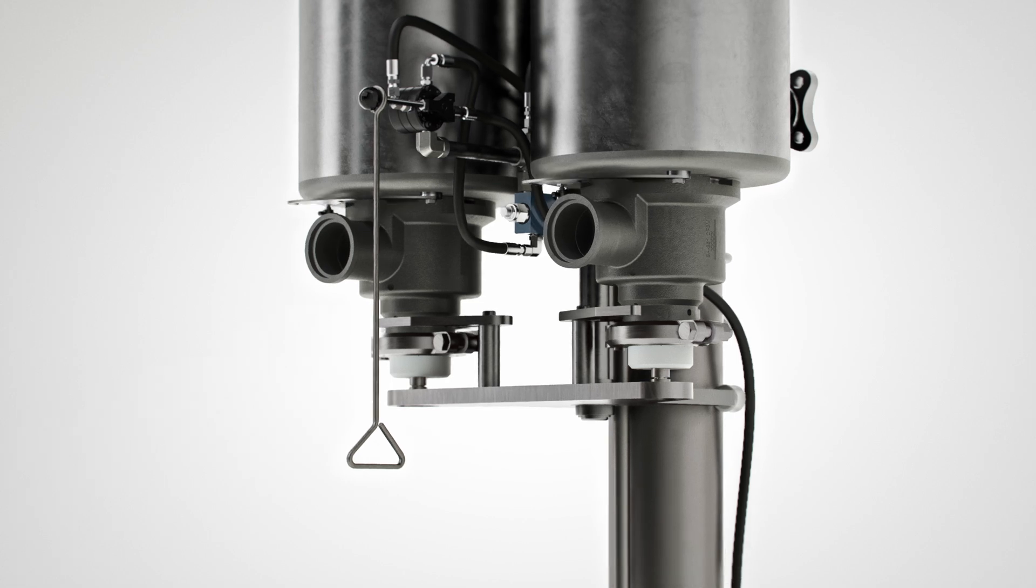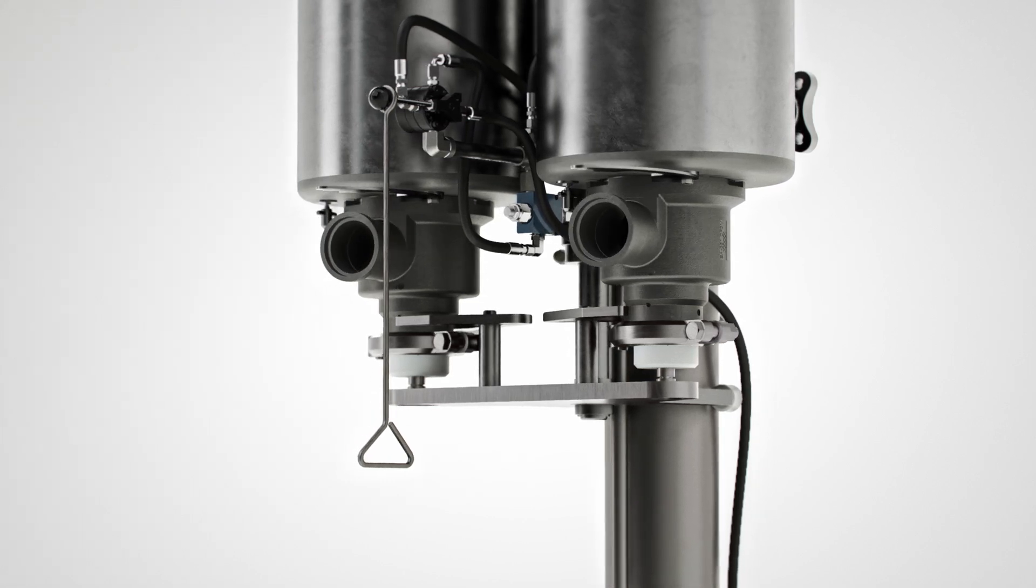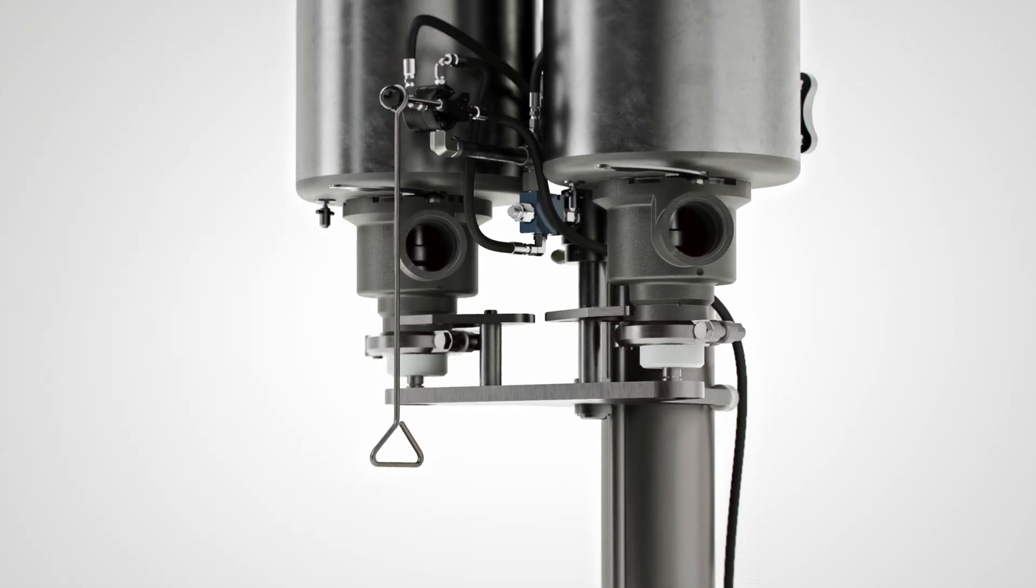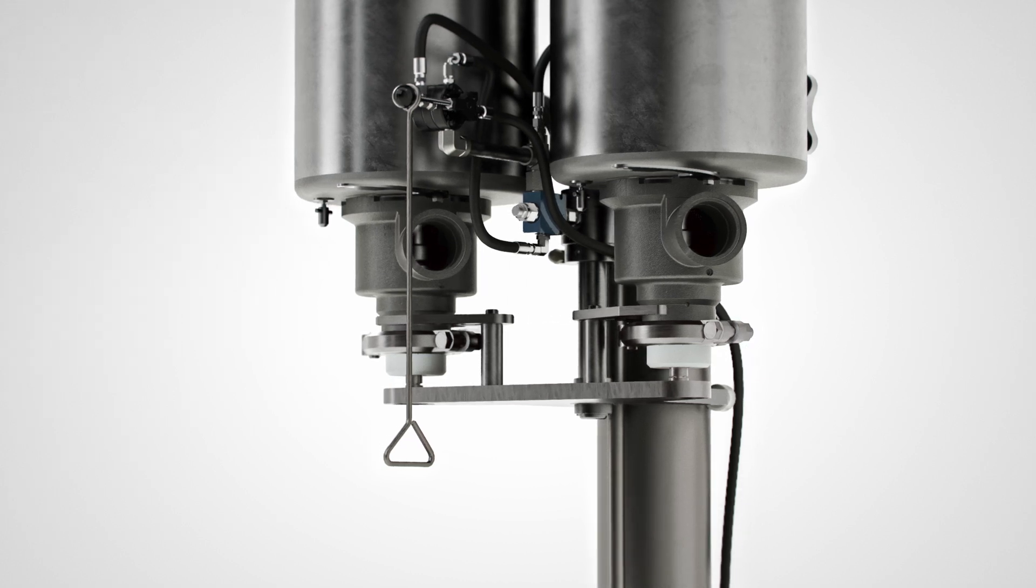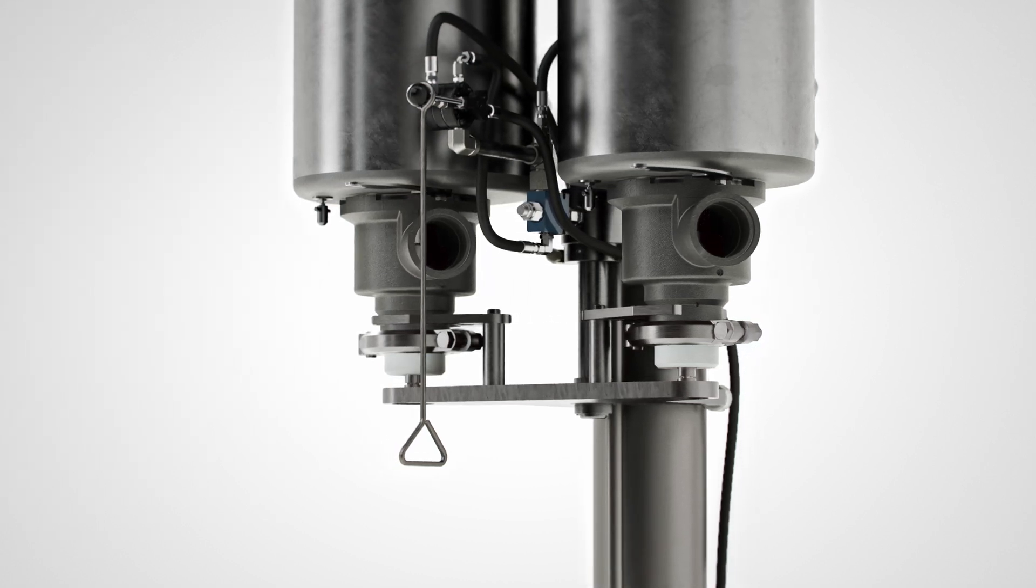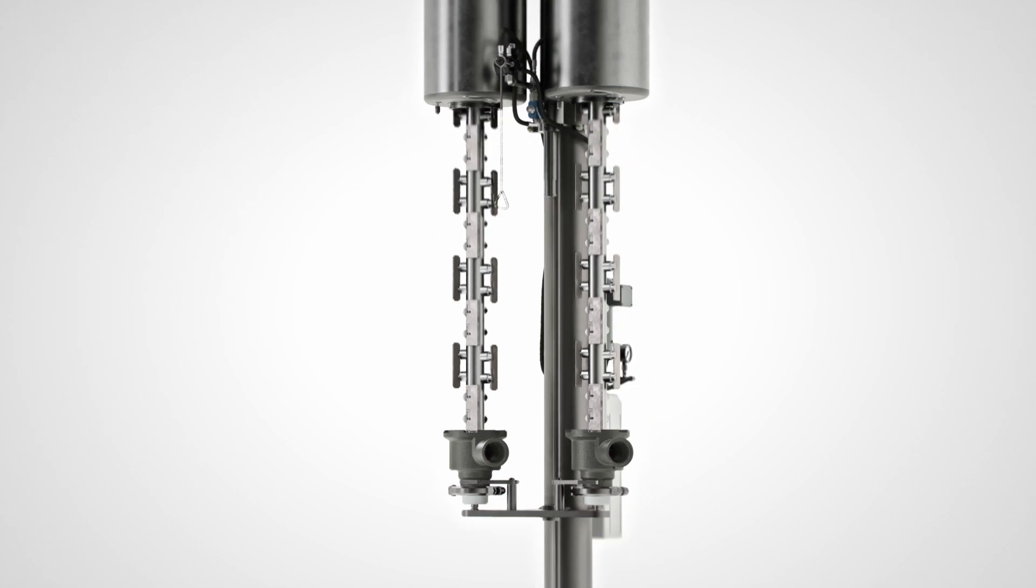Next, the bayonet locking arms are disengaged to unlock each non-drive end head from the heat exchanger tubes. The head and mutator shaft assemblies are then lowered to the desired position.